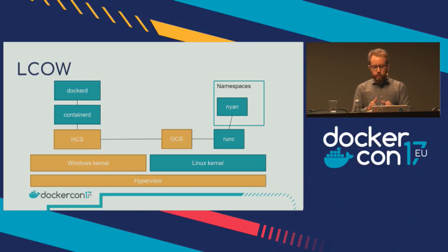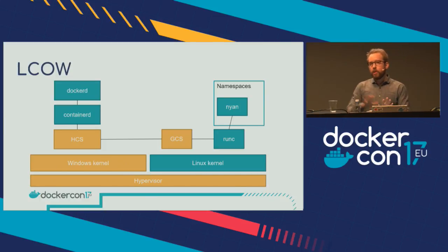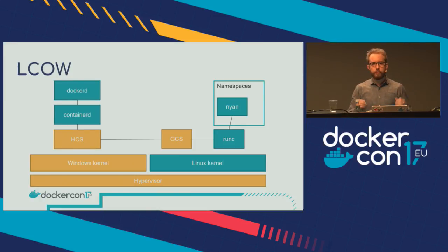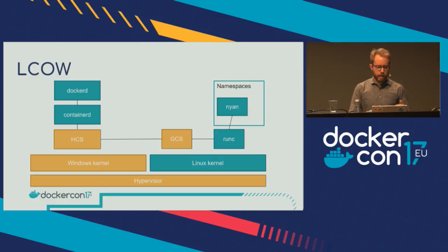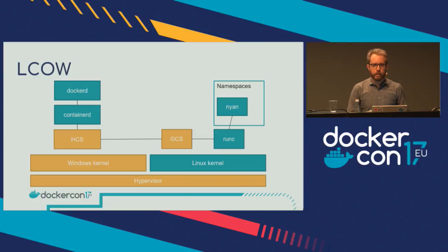I want to point out that I've only drawn one container in this picture. If you have multiple containers today, each of those is going to be a separate VM. This is in contrast to Docker for Windows, where there's just one big VM that hosts all the containers. We think we can actually get the performance good enough that that's acceptable, but we also see value in the longer term of being able to run multiple containers in a single VM instance.